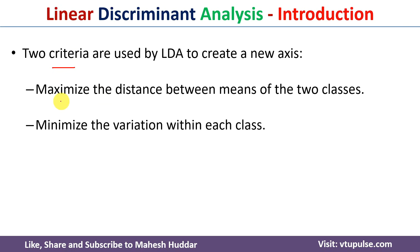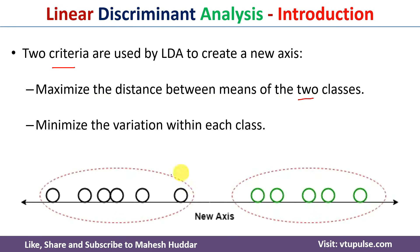The first criterion is we need to maximize the distance between the means of the two classes. Let us assume we have two classes — the mean may be present here and the mean is over here. We should maximize the distance between these two means. The second criterion is we need to minimize the variation within each class. The variation within the class should be as small as possible, and the distance between the means of the two classes should be as large as possible. These are the two criteria to consider when converting data from higher dimensional space into lower dimensional space.